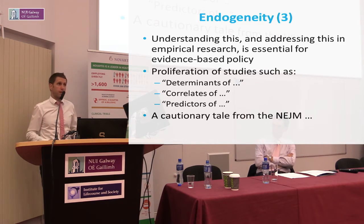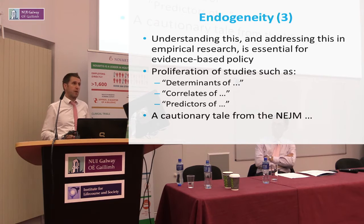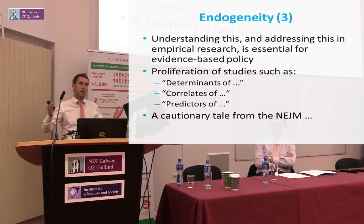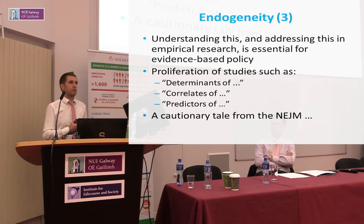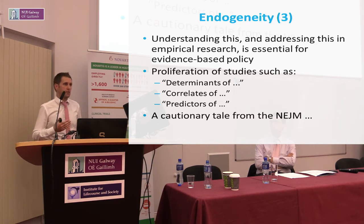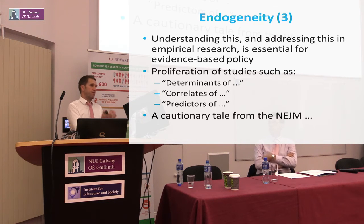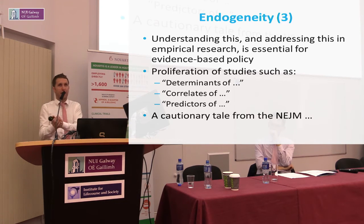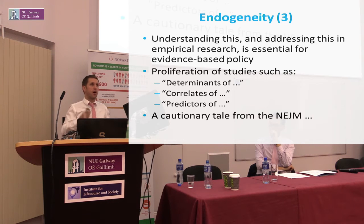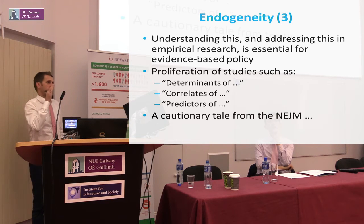My argument is a simple one: understanding endogeneity is very important in empirical research. But I think we really need to do more to address these issues. It's essential for evidence-based policy making. When we go to policy makers and say we found evidence that changes in X cause changes in Y, that's much more important than saying X is correlated with Y — which is not particularly useful for telling a policy maker what she should do to address a particular problem.